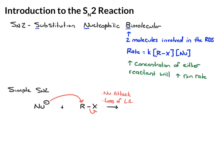And then the product of the reaction, we have the nucleophile bonded to the R, and X minus as a leaving group that left.